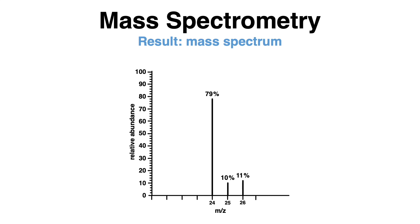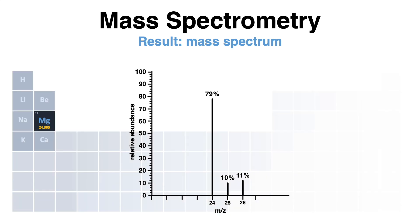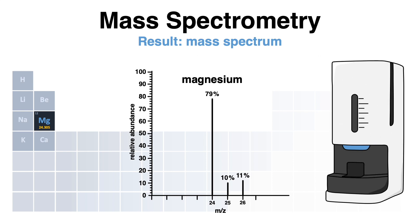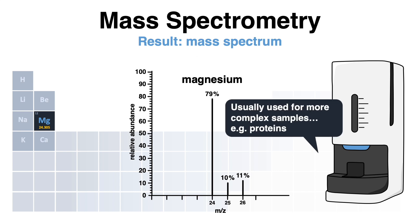Playing detective while taking a look at the periodic table, one would discover that this looks pretty much like magnesium with an atomic mass of 24.3u, and indeed it is. The smaller peaks are some heavier isotopes of the element. Mass spectrometry is usually used for more complex molecules such as protein samples. Databases help to identify the molecules of interest.